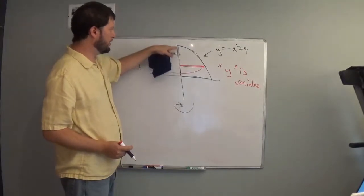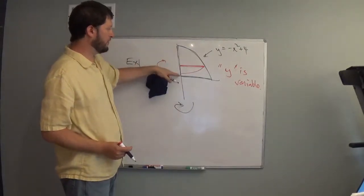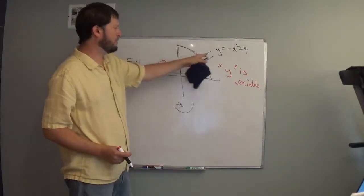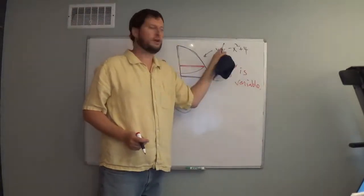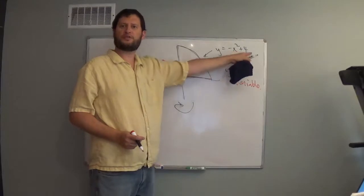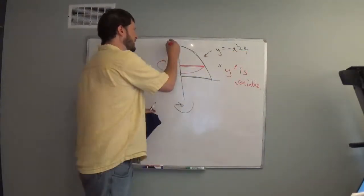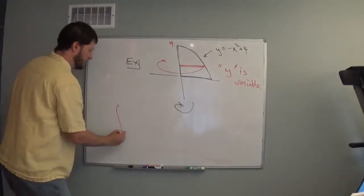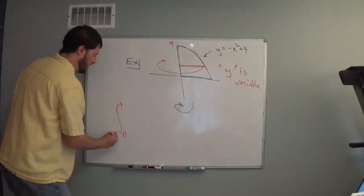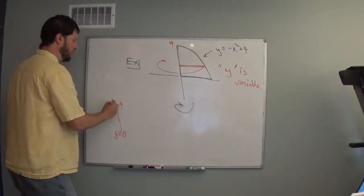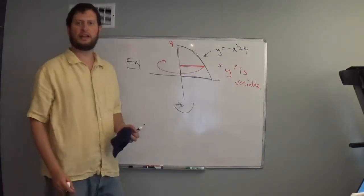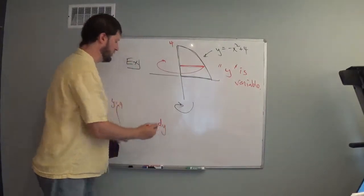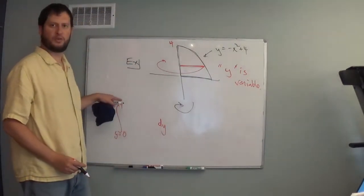We're going to go from y equals 0 to y equals 4. We need to figure out the upper limit — from the original equation y equals negative x squared plus 4, the y-intercept is 4. So my integral is going from y equals 0 to y equals 4. I like to write y equals so I don't forget that y is the variable. So dy, y equals 0 to y equals 4.